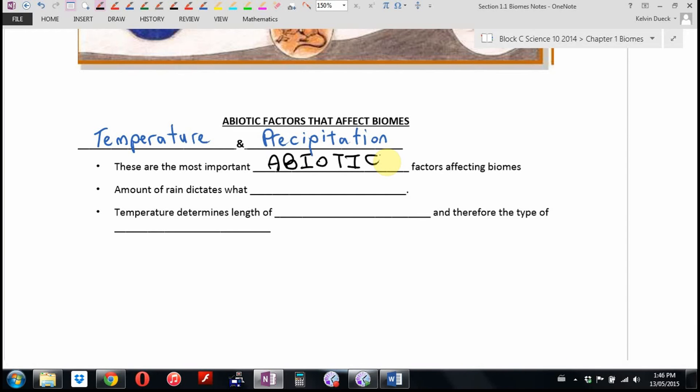Well, in terms of a life pyramid, in terms of what affects what, it all starts with plants. So the amount of rain dictates what plants can grow. Because if you've got no plants, you're not going to have much higher or bigger or more complicated life forms.